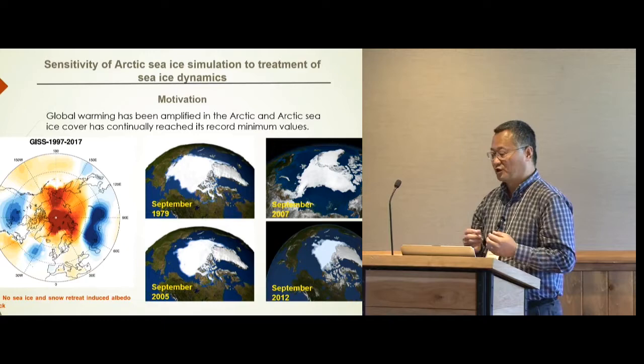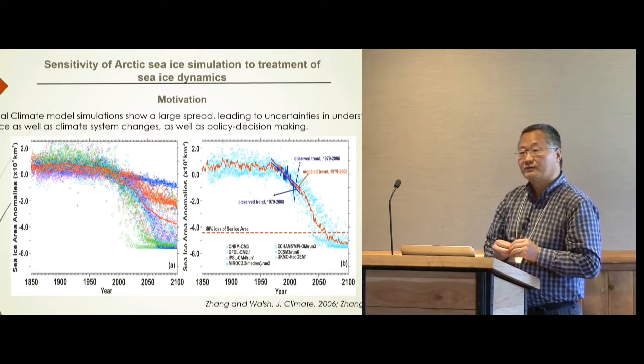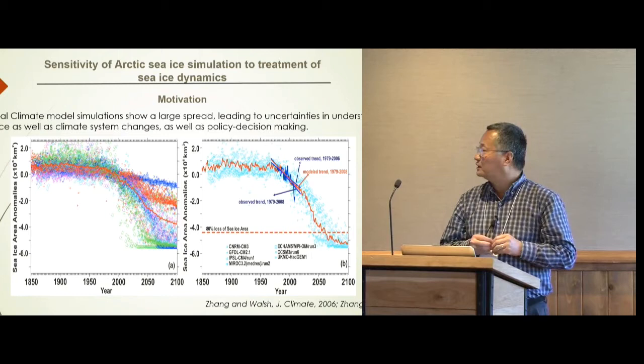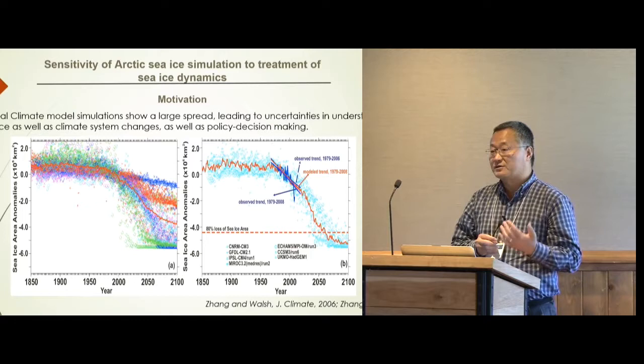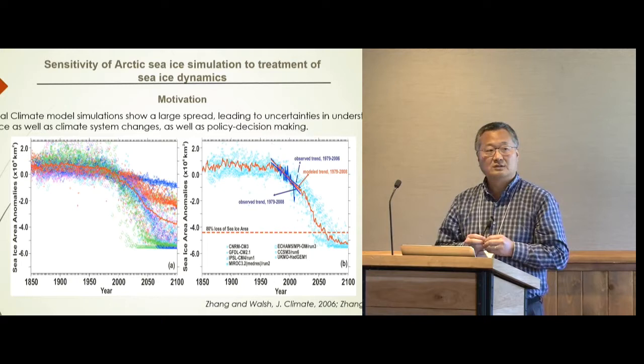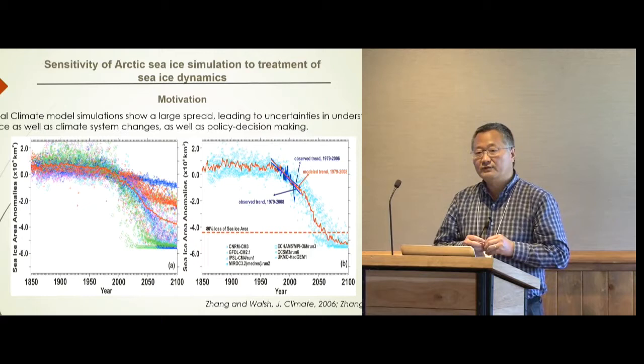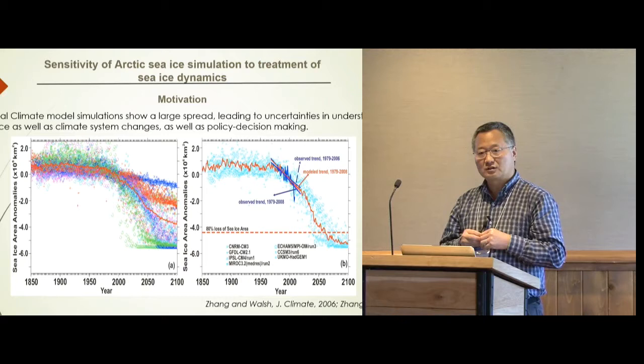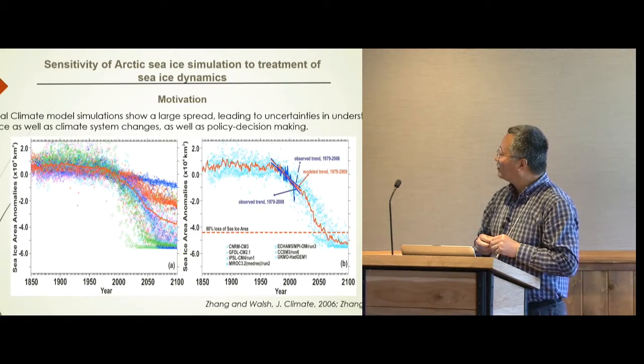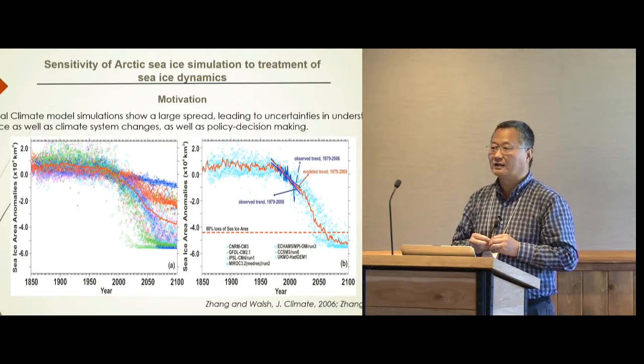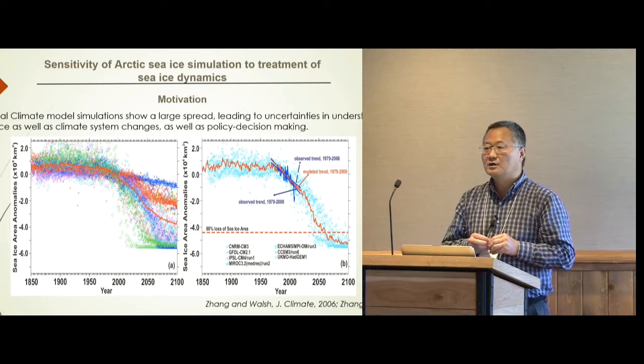When we look at model simulations of CIS, we find there is a larger spread across different models and larger uncertainty. The left panel shows the CIS area anomaly simulated by CMIP3 models, and the CMIP5 results are quite similar — there is a large spread and large difference across different models. Generally, the community tries to reduce this spread by selecting a small number of models, but not much work has been done on the physical dynamics.